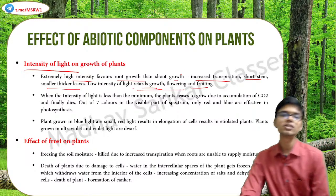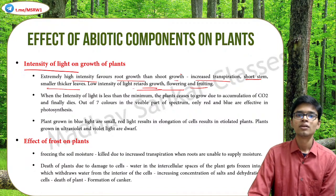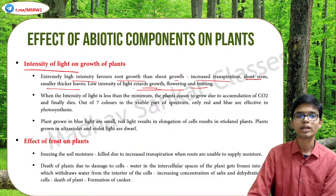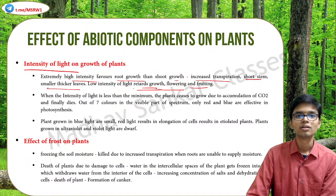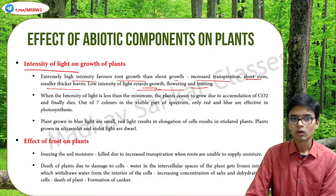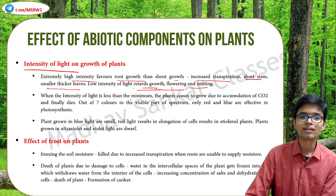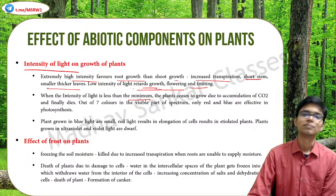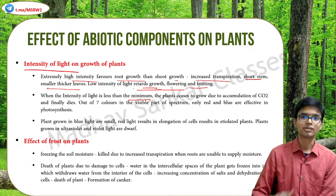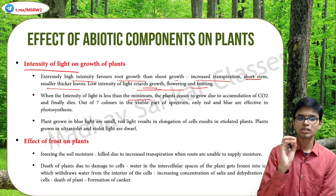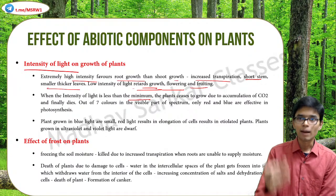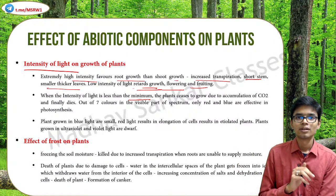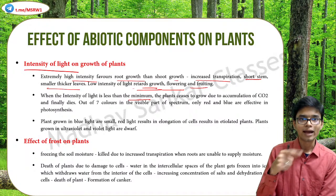Low intensity of light retards root growth, flowering, and pruning. If light intensity is very low, photosynthesis does not take place adequately, which means the nourishment and producing capacity of the plant is inhibited, so growth retards and reproduction is affected. When the light intensity is less than the minimum, the plant ceases to grow completely and starts to accumulate carbon dioxide. Since photosynthesis is not taking place, the carbon dioxide absorbed does not get converted into food and oxygen, and eventually the plant will die.